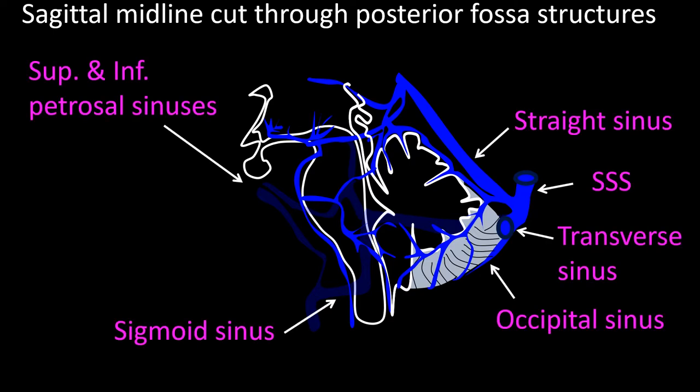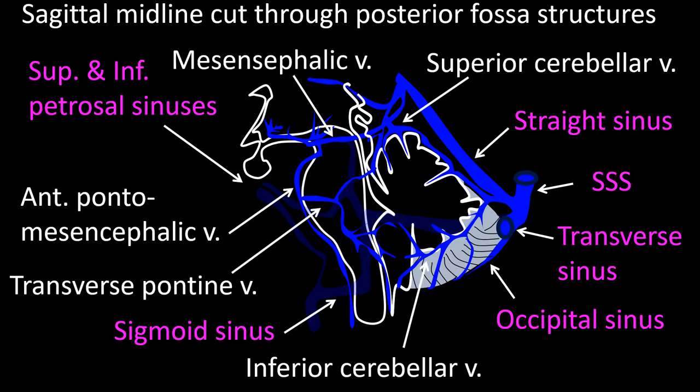Here I have listed some of the vessels we have already talked about — please stop the video and take a few minutes to read them. In this new frame I have included the names of other vessels in this region not previously mentioned. They are very inconsistent in their trajectory and are thus named differently in different books, so the main purpose of showing them is that you know they exist.